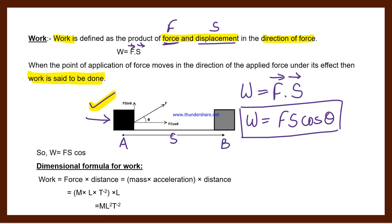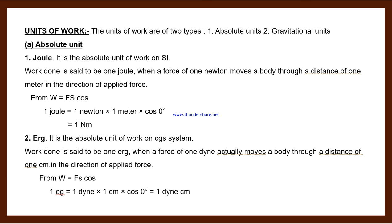Now what is the dimensional formula for work? Force F means MLT^-2, which is mass into acceleration, and S is displacement, which has dimension L. So L into L becomes L^2. Therefore, the dimensional formula is ML^2T^-2.